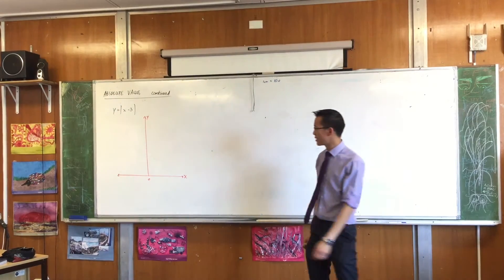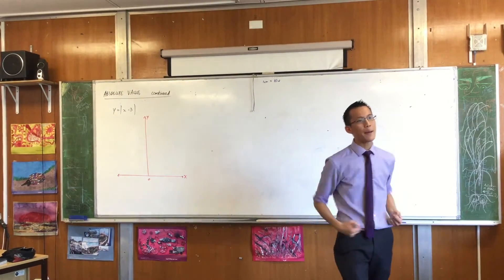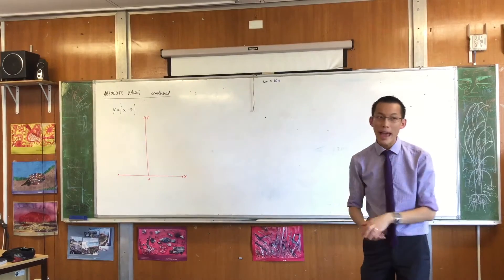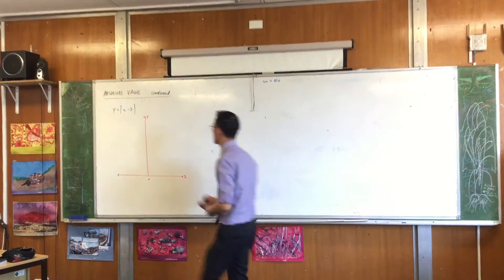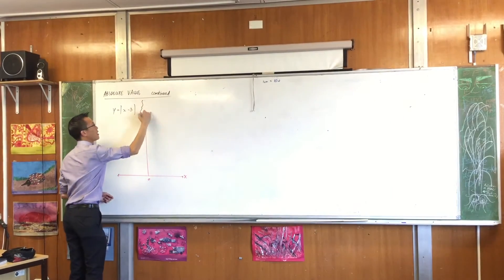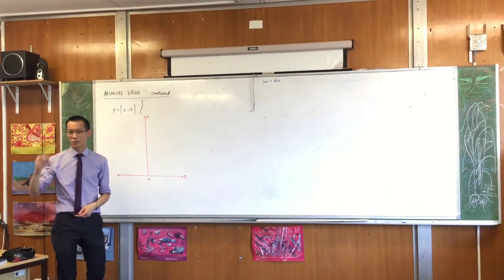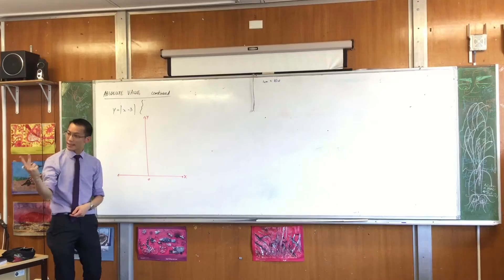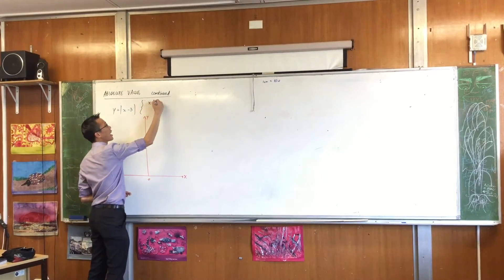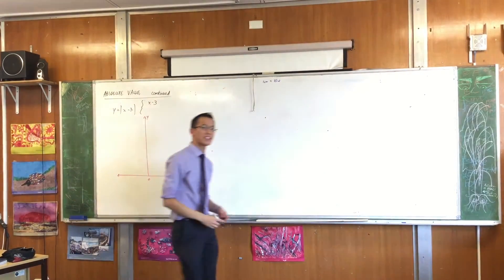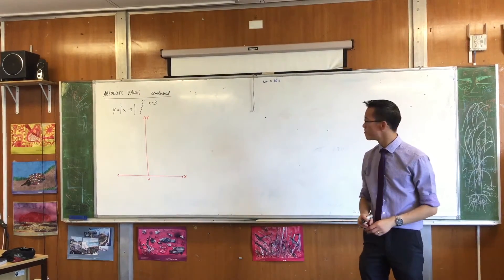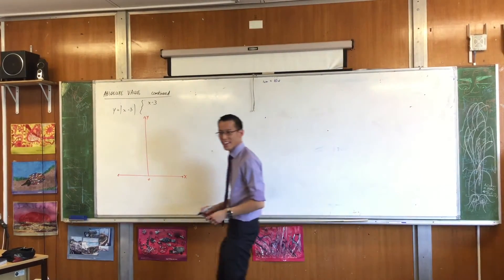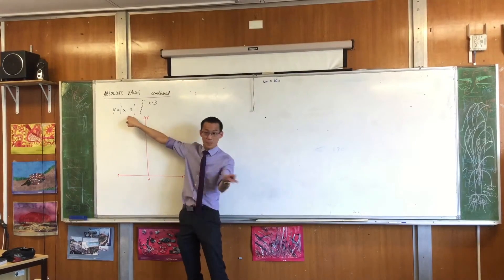Now what I want you to recall is we defined the absolute value in a variety of different ways. The particular way we were pushing on was this one. The absolute value of x minus 3 is equal to one of two things at different times. Sometimes it's just regular old x minus 3. When is that the case? When that thing is positive.